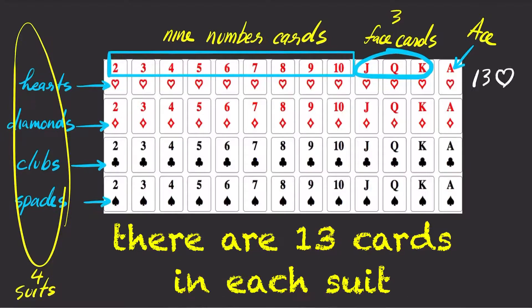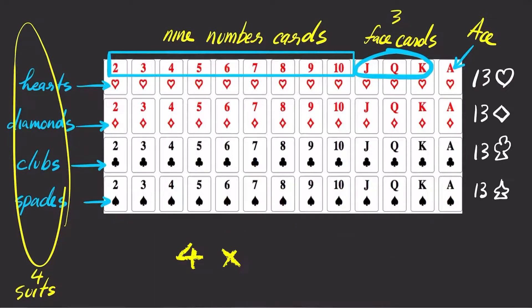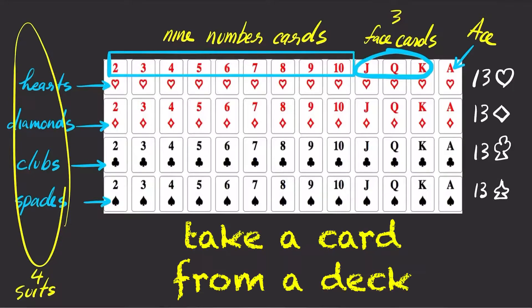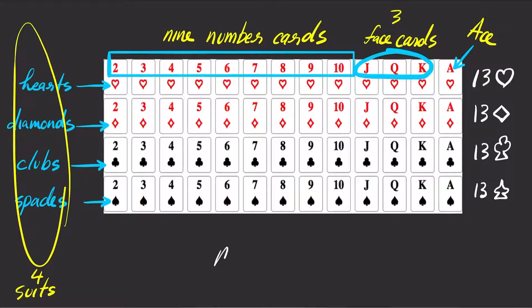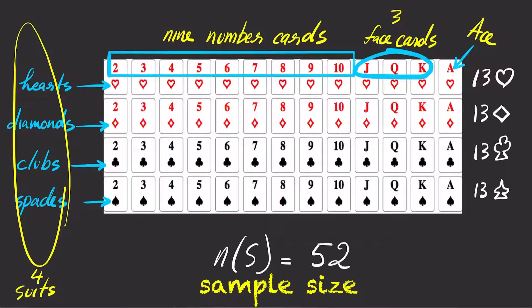Since there are 13 cards in a suit and a deck of cards has 4 suits, 4 times 13 equals 52. So when you take a card from a deck of 52 cards, the number of all possible outcomes is 52.